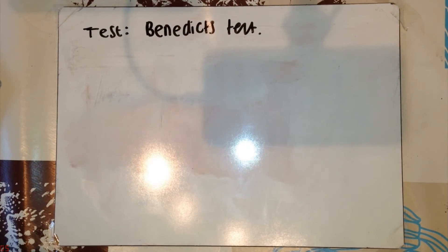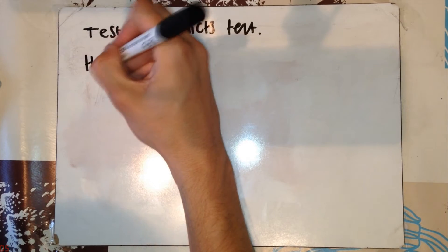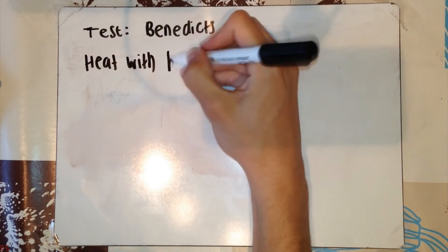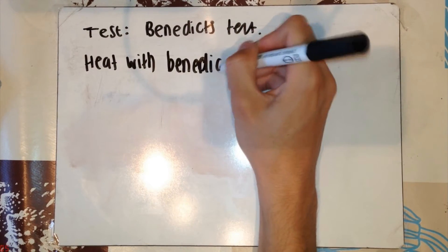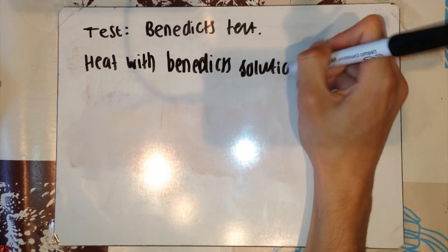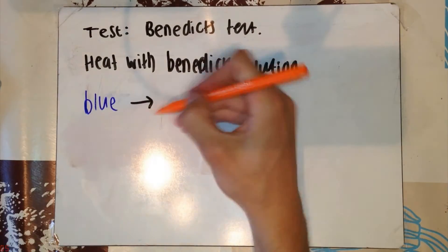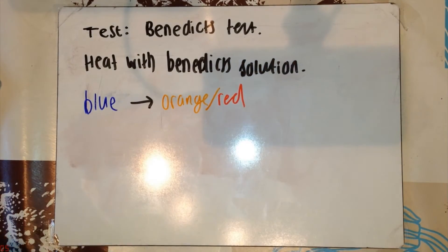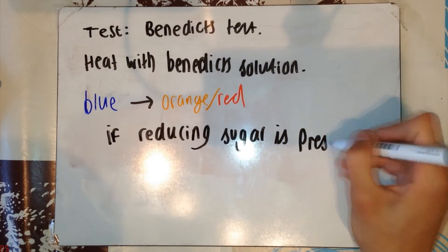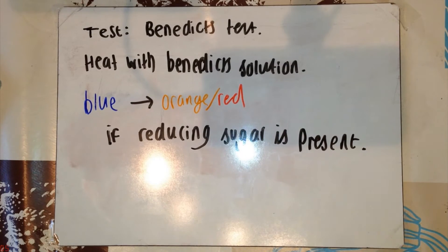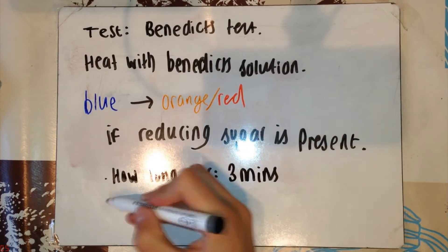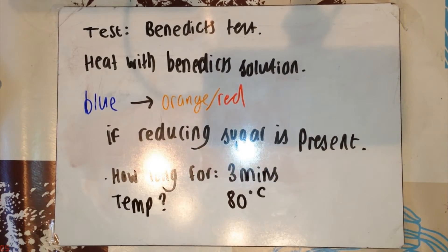This test is Benedict's test. So, you add a few drops of Benedict's solution to your solution that you believe may contain the reducing sugar. In a test tube, you heat this in a water bath at 80 degrees Celsius for 3 minutes. If a reducing sugar is present, the color should change from blue to red-slash-orange type color. Remember the conditions. 3 minutes at 80 degrees Celsius in a water bath.